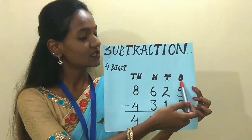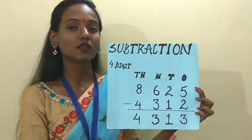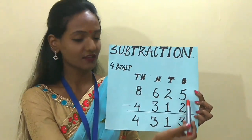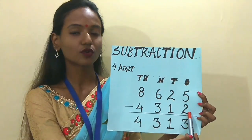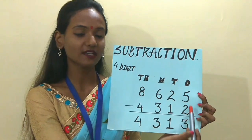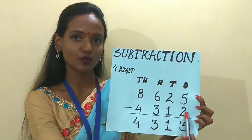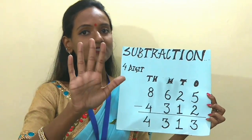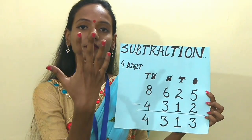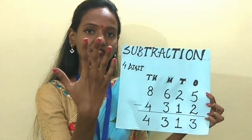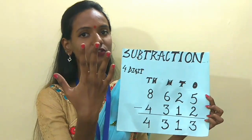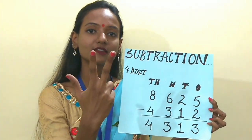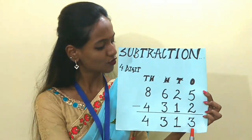First we will start subtracting with the 1s place. As you can see there are 2 digits: 5 and 2. So we shall subtract 5 and 2. Let's subtract children. 5 minus 2 — we have 5 fingers here. Let's subtract 2: 1, 2. We are left with 3 fingers. So the answer is 5 minus 2 equals 3.